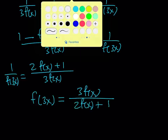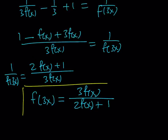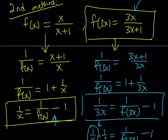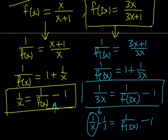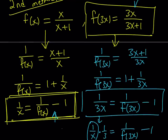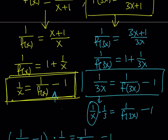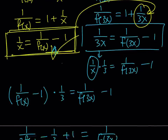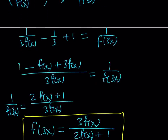And that's basically the same result we got using the first method, as expected. There's also a probably easier path: once I had 1 over x as 1 over f of x minus 1, I could have plugged it directly into f of 3x's expression and worked it out — pretty much the same thing but a little shorter.